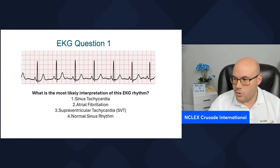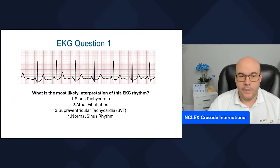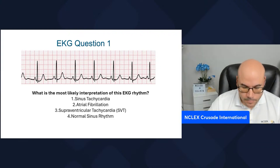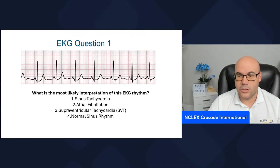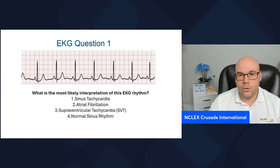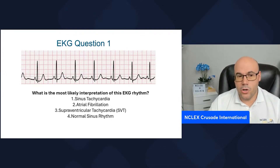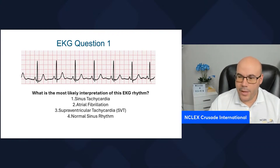You need to determine if the rhythm is regular, determine the heart rate, look at the PR interval and identify if it's normal or not, look at the QRS complex, and look for the relationship between the P wave and the QRS complex.